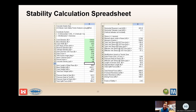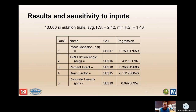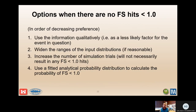This slide shows what the stability analysis inputs look like in a spreadsheet. Using 10,000 iterations, the Monte Carlo analysis yielded an average factor of safety of 2.42 and a minimum factor of safety of 1.43. The table shows which input parameters influenced results most — changes in intact cohesion yielded significant changes in the calculated factor of safety, while changes in concrete density caused little change. Notably, the analysis did not yield any results below a factor of safety of 1.0. Does this mean the probability of failure is zero? Not necessarily — remember, all models are wrong.